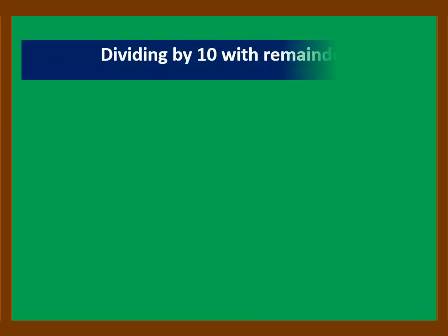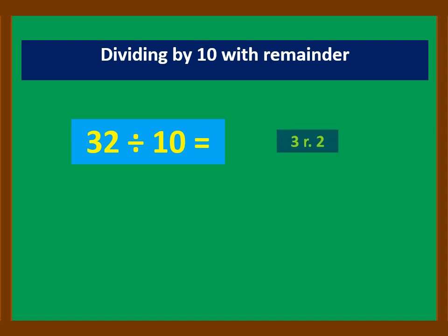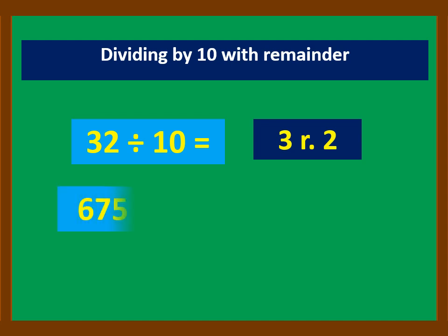In dividing by 10 with remainder, let's divide 32 by 10. The last digit of the number is 2, so that is the remainder, and the remaining number is 3, so that is the quotient. For 675 divided by 10, the last digit is 5, so that is the remainder, and the remaining digits, 67, is the quotient.